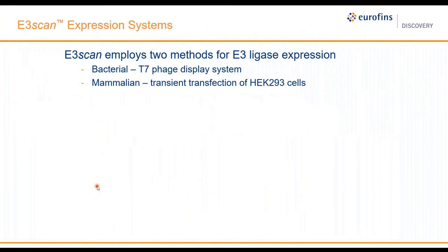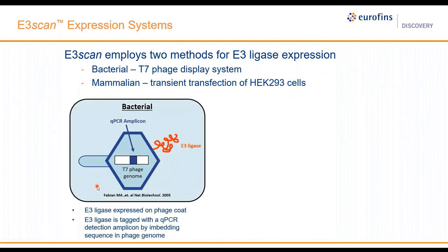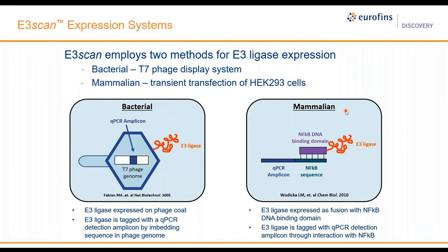To produce E3 ligases for the E3 scan technology, we use two methods. In both methods, the human E3 ligases are labeled using a qPCR amplicon for signal detection and expressed using two systems. One is the T7 phage display system, where the E3 ligase is cloned into the T7 phage genome and displayed on the phage coat, with the qPCR amplicon also cloned into the phage genome. The other system is mammalian HEK 293 cells, where the E3 ligase is N-terminally fused to the DNA binding domain of NF-κB and transiently expressed, with a qPCR detection amplicon that binds to the NF-κB domain added to the reaction.